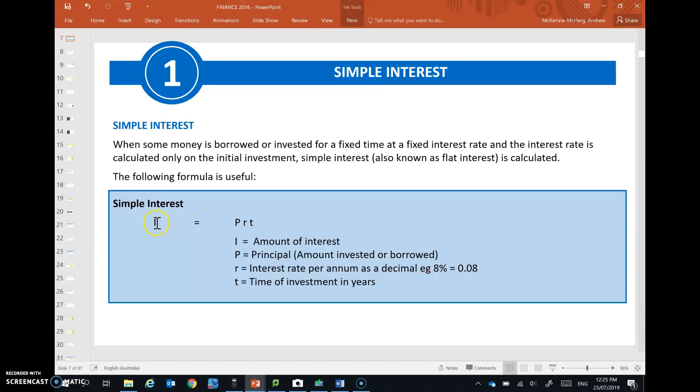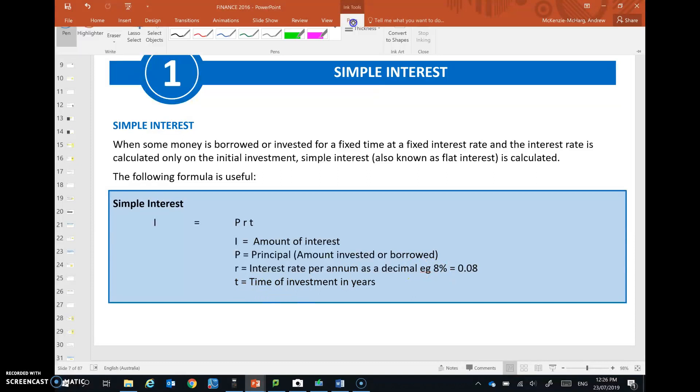Or perhaps you invest money in the bank and the bank pays extra money on top of the money that you invested and you've received that interest extra to the original amount. So the simple interest formula is here. It says that the amount of interest I is equal to the original amount, the principal, multiplied by the rate per annum as a decimal.